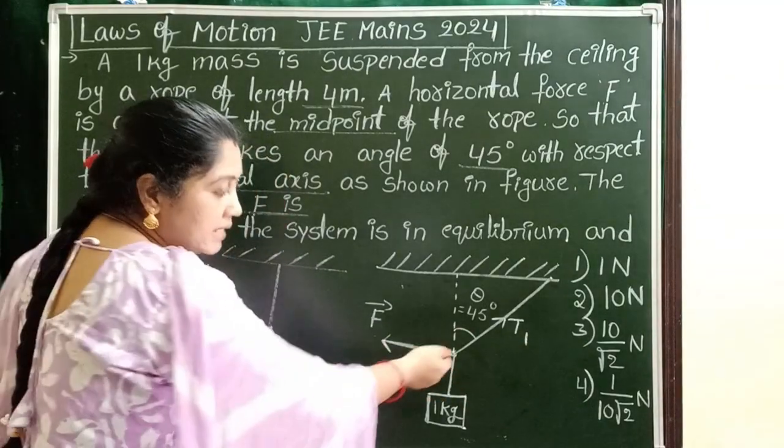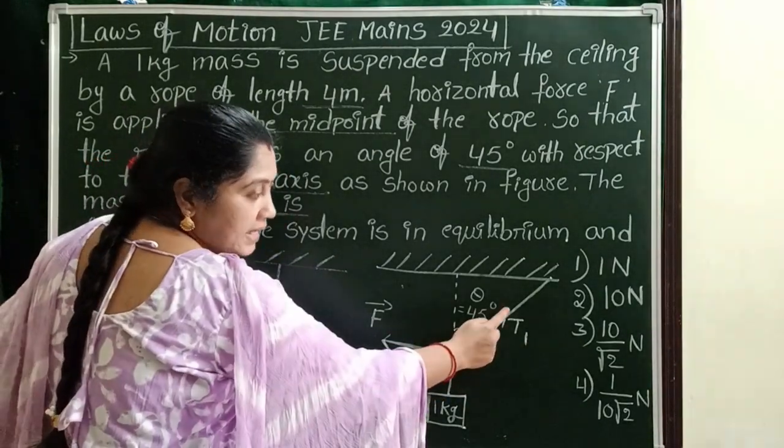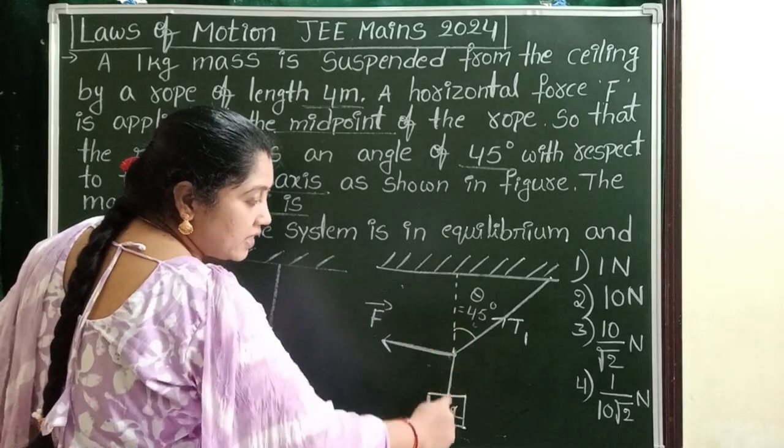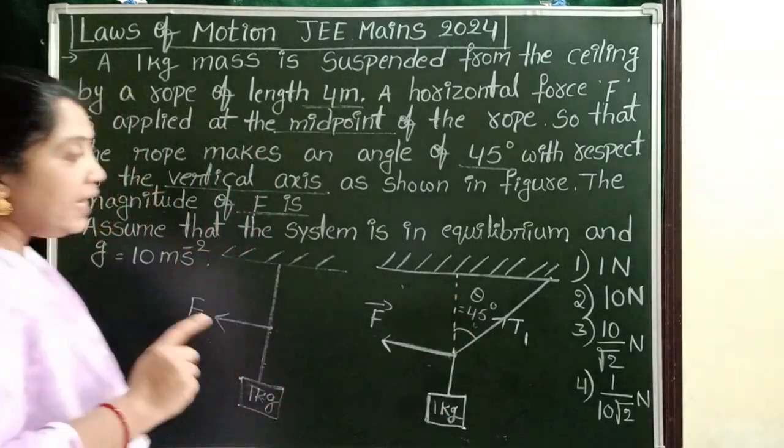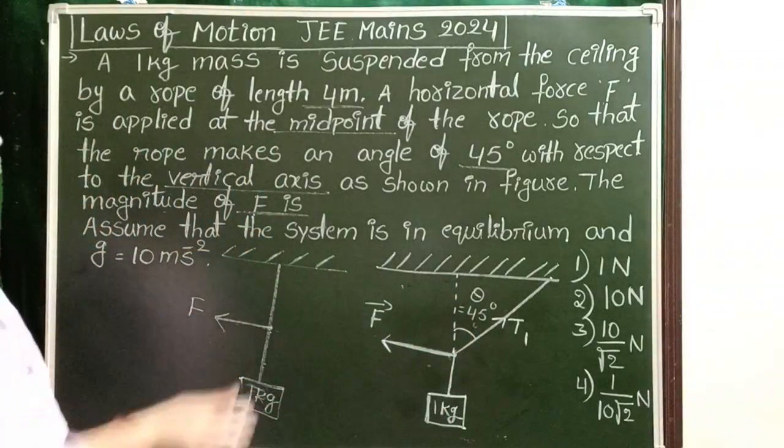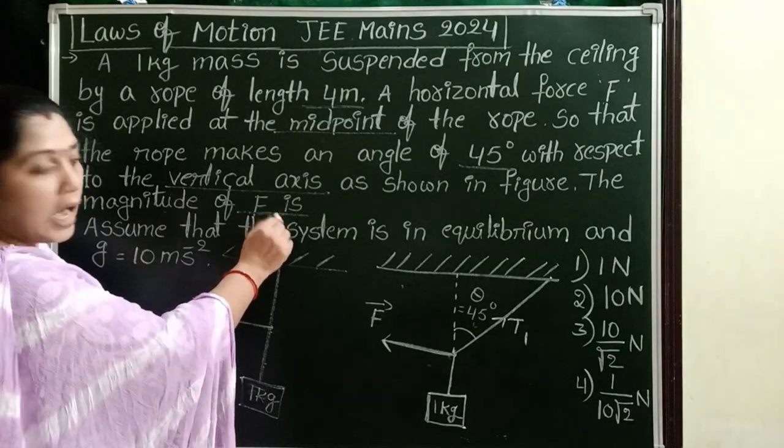But after applying a certain force, this rope makes an angle of 45 degrees with the vertical direction. Here, we have to find out the magnitude of the applied force.